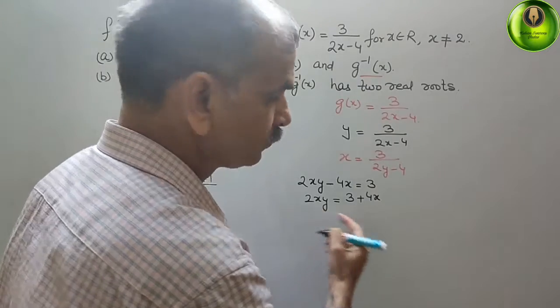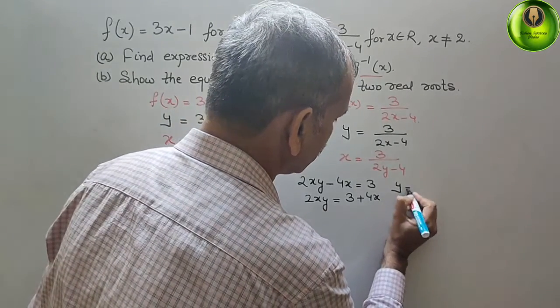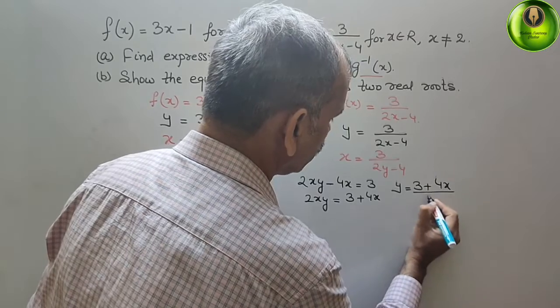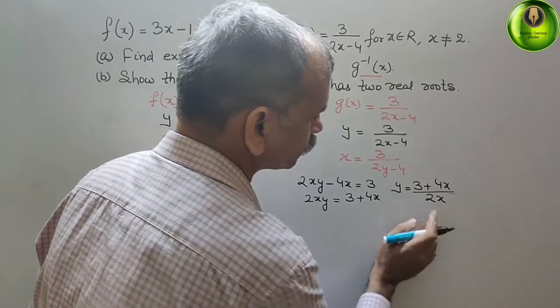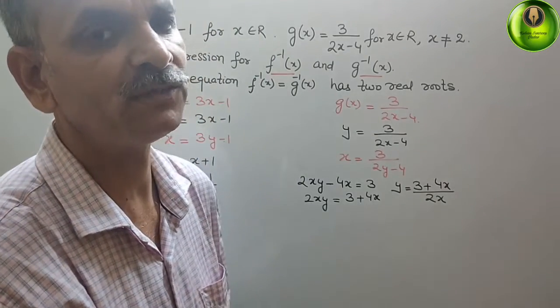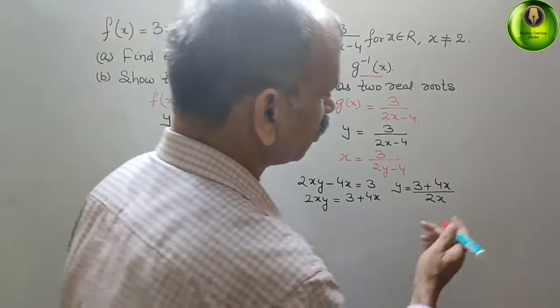So what is your y? y is nothing but 3 plus 4x by 2x. So this y is known as your g inverse. This is your g inverse.